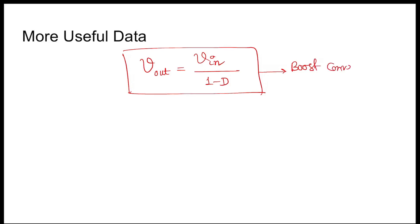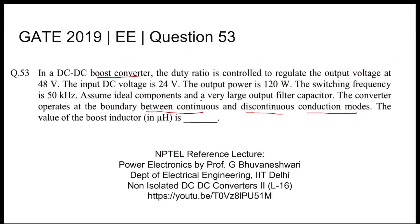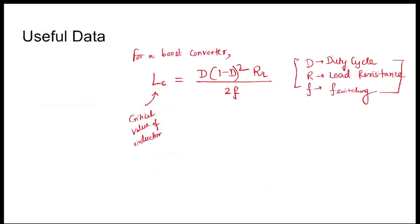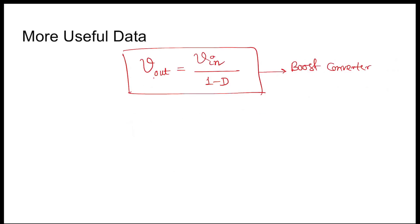This is also the information we need in order to solve this question. So output voltage DC is 48 volts, input voltage DC is 24 volts, and switching frequency is 50 kilohertz.